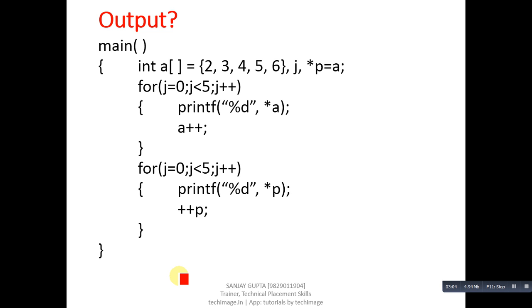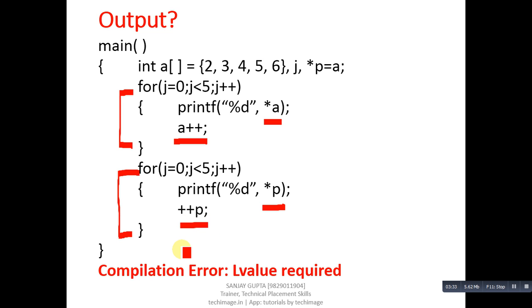This is another code segment. Here array is declared, then pointer p is containing address of a, so a is representing the array. Its name will provide base address into p. Then there are two loops. Inside the first loop, value of a is printed and a is incremented by 1. In the second loop, value of p is printed and p is incremented by 1. Now first check its output. It will provide compilation error: l value required.